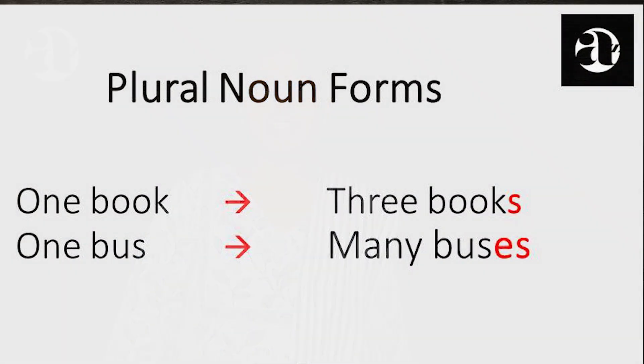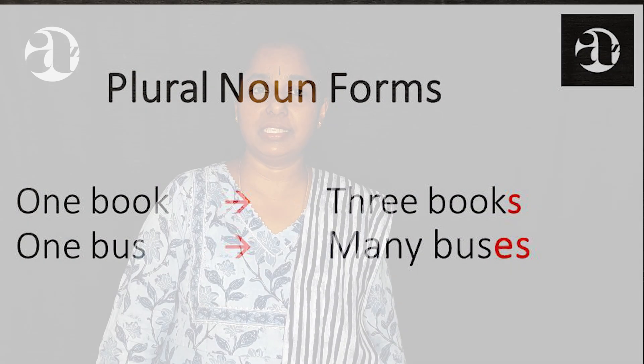When we refer to more than one number, we usually add the suffix S or ES to form the plural noun. For example, one book, three books; one bus, many buses. While we mostly get the plural form right, we might go wrong with some irregular plural noun forms. Our focus today is on those irregular noun forms.